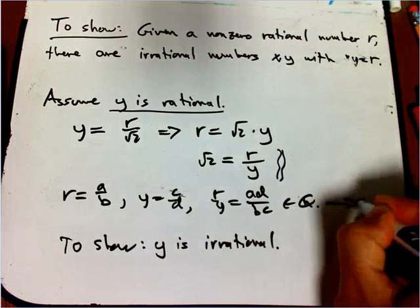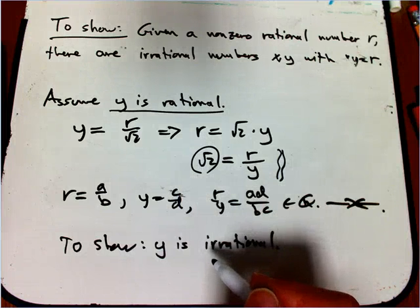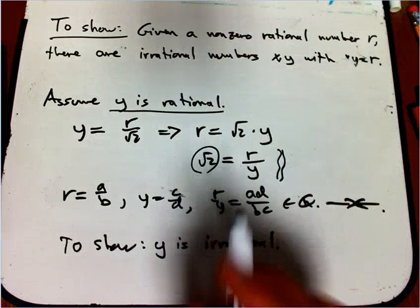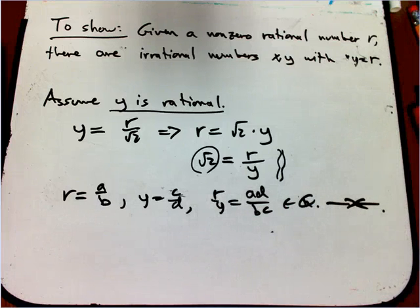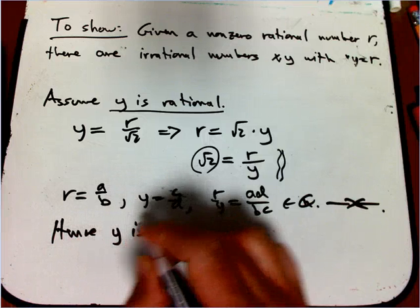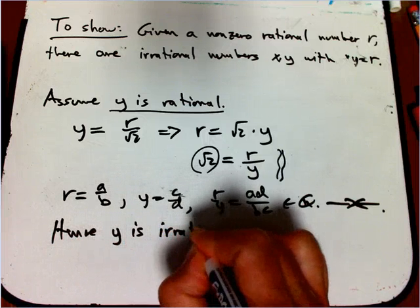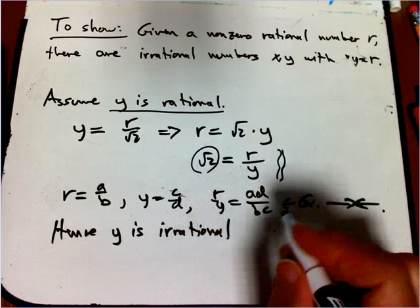There's our contradiction. Because we know that that square root of two is not rational. So there's our contradiction. What does that show? Oh, I just erased it. Hence, Y is also irrational, just like X was.